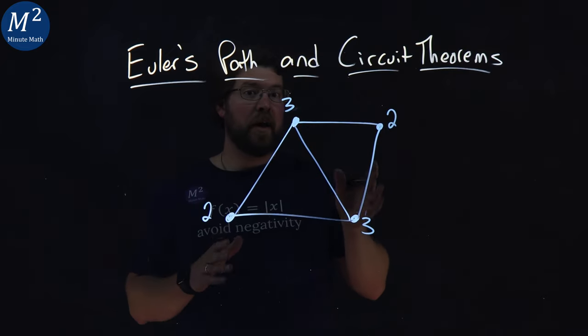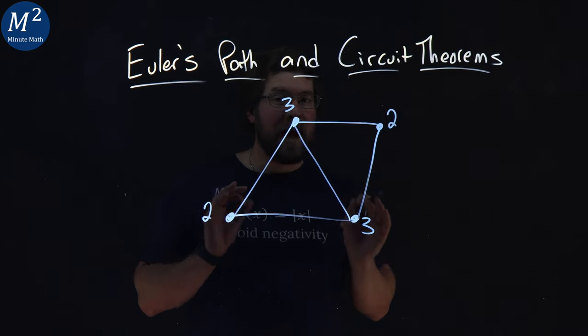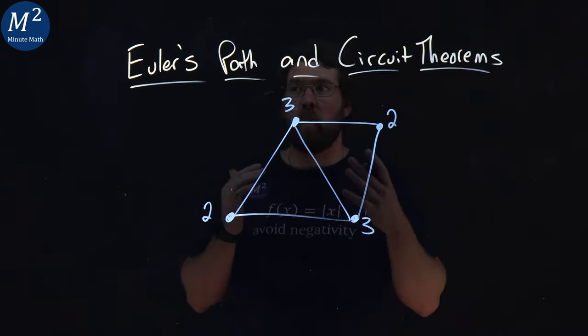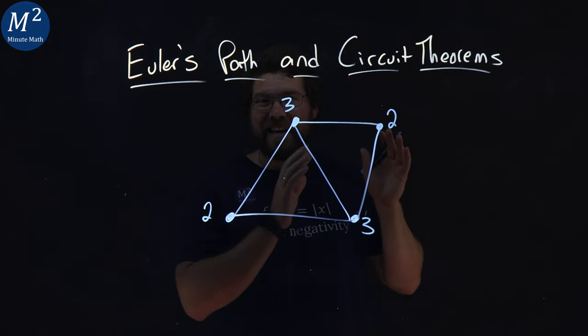Here we see that all of the vertices are not even degree because we have a degree 3 here and a degree 3 here, meaning an Euler circuit no longer can exist.